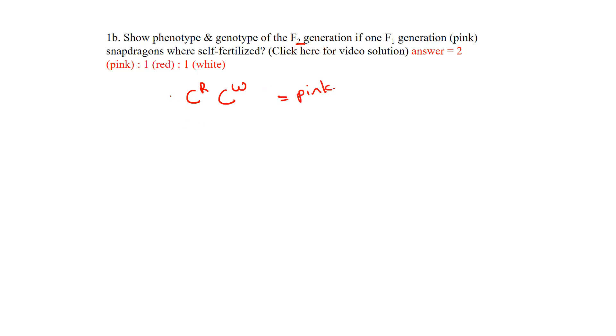We'll take that F1 and self-fertilize it. Some plants can self-fertilize because they have both male and female parts—it's like two identical parents. We'll use a monohybrid Punnett square to work this out.